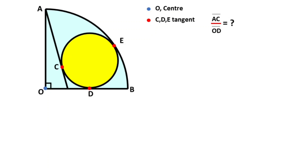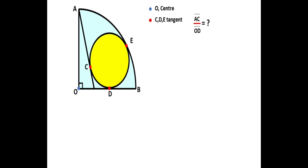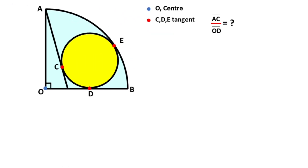Hello everyone. In this video we have one circle and one quarter circle. O is the given center of the quarter circle, and these are given as tangent lines. The question is: what is the ratio of the length of AC to the length of OC? First of all, let's call the length of AC x, and the other side y. Let's call the center of the small circle K.